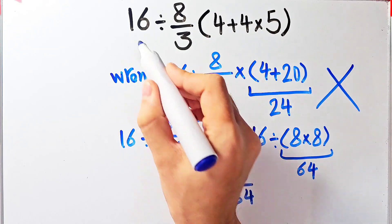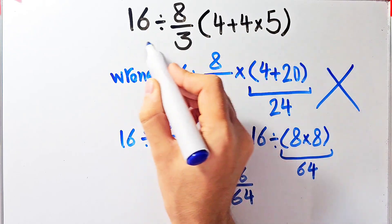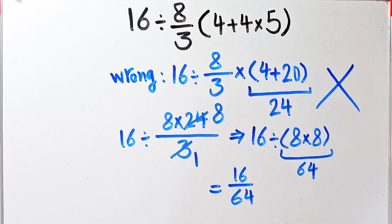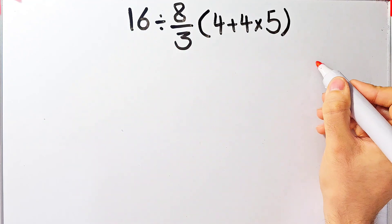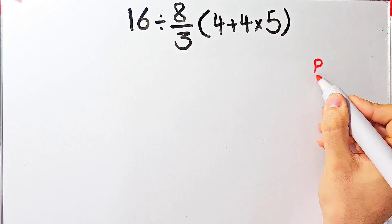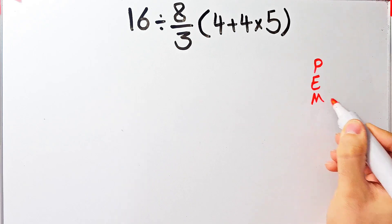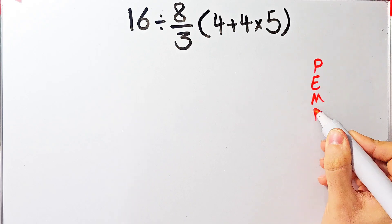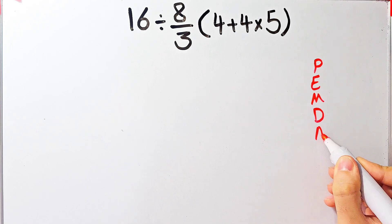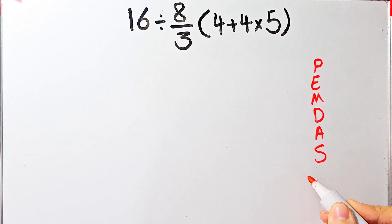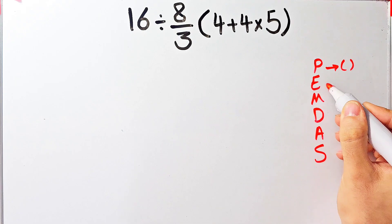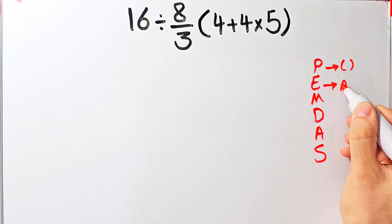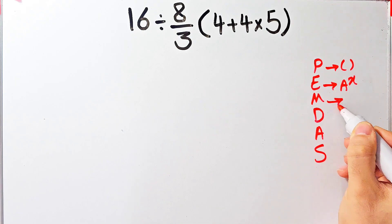Let's solve this question step by step together. To solve this question we need to follow the order of operations, which is PEMDAS. PEMDAS shows the priority of mathematical operations, and if you don't pay attention to this rule you get the wrong answer. P stands for parentheses, E stands for exponent, M stands for multiplication.